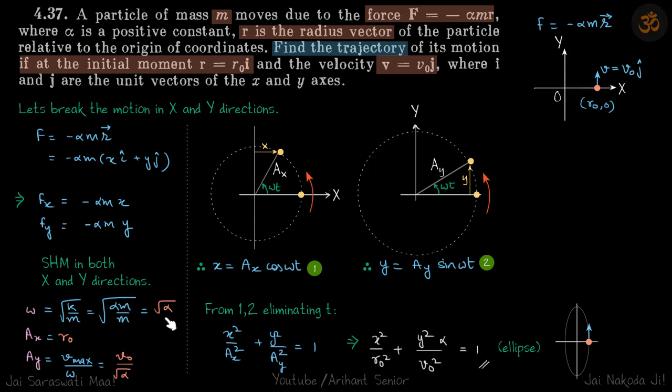Now amplitude in x direction. You can see initially, if you just think about the motion in x direction, its velocity is zero in x direction. That means it is at an extreme, and the forces are central in nature, so that means it is performing SHM about this point o. And it is at an extreme, so we can directly say since it's an extreme, x equals ax cos omega t.